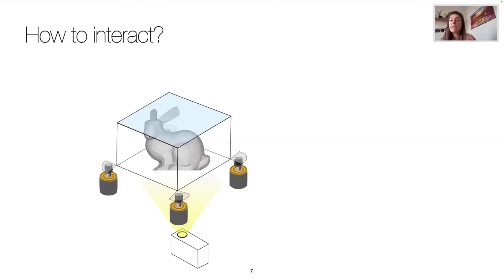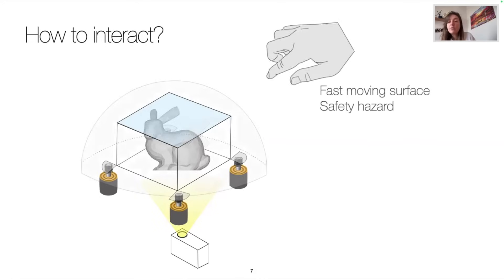So volumetric displays are great to render true 3D objects, but now how do we interact with them? We might want to put our hands within the volume. However, we do have a fast-moving surface causing a safety hazard. Usually volumetric displays have a safety dome around their display volume.